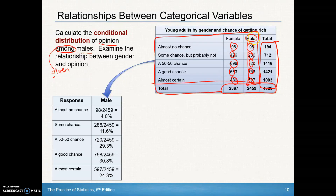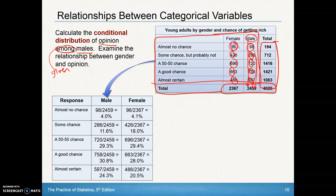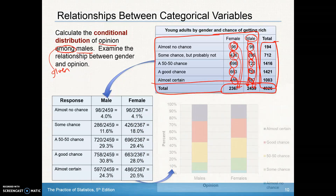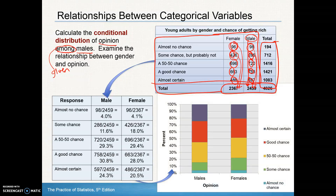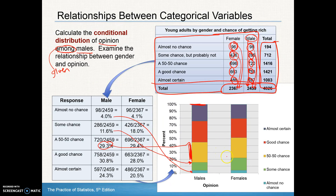Looking at the conditional distributions of opinion among males: we take 98 out of 2,459, 286 out of 2,459, etc., continuing down the table. We do the same for females — 96 out of 2,367, 426 out of 2,367, and so on. This is shown in a segmented (stacked) bar graph, where we stack individual percentages — for example, 4%, then adding 11.6% on top — until we reach 100%, allowing a side-by-side comparison of the two populations.